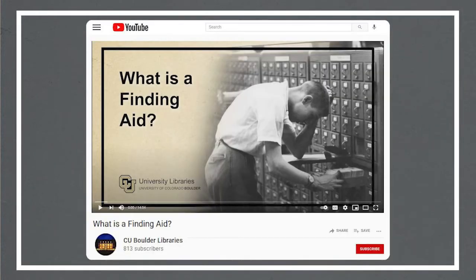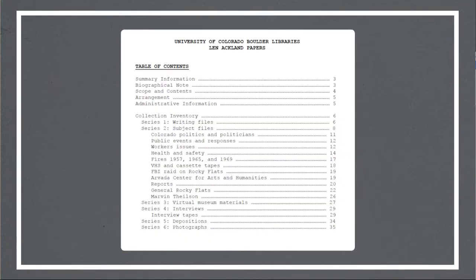If you're new to doing archival research, we recommend starting with our previous video, What is a Finding Aid?, which explains a bit about what archival collections are, where they come from, and how they are stored in the archive. As a reminder, a finding aid is a document created by archivists to help you navigate what's included in the collection and where in the collection to find it.